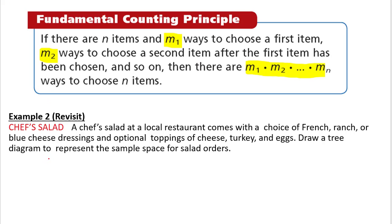Revisiting the chef's salad: I have three options for dressing — French, ranch, or blue cheese — multiplied by two options for cheese, two options for turkey, and two options for eggs. Multiplying all those together is basically 3 times 8, and you get 24.